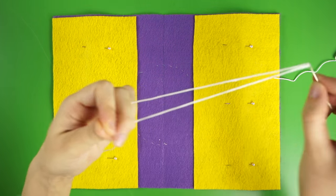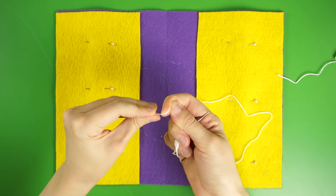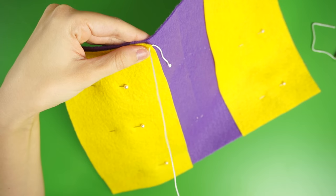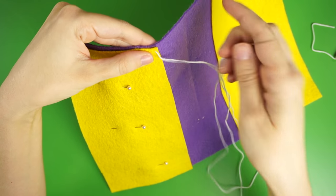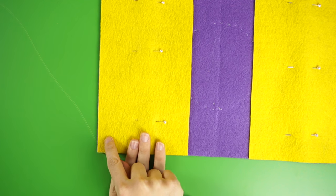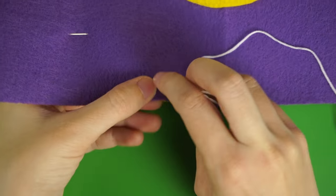Thread a needle with a long strand of embroidery floss and tie a knot at the end. Then, start your needle on the inside of one of the top inner corners so the knot gets hidden inside your pocket. Sew around the outside edges of the first pocket, attaching the pocket to the cover. I'm using a simple running stitch, but feel free to use any stitch you'd like.